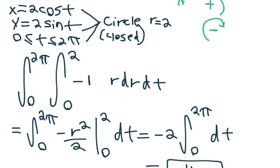Now that we have all this information, we could simply calculate the double integral of minus 1dA by using polar coordinates. dA becomes r dr dθ, with r going from 0 to 2.